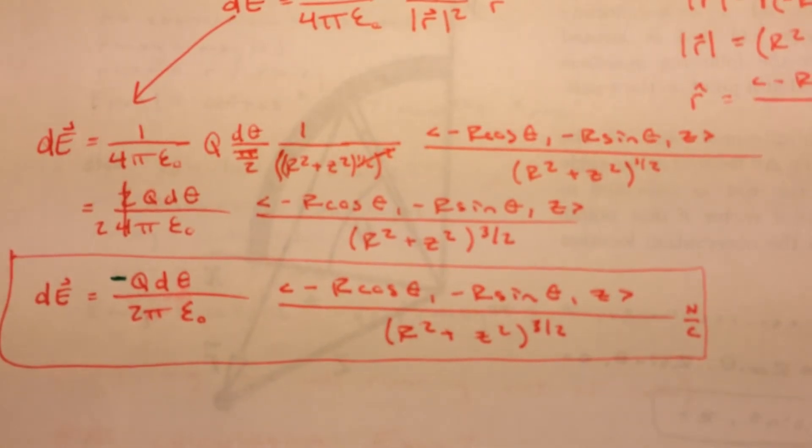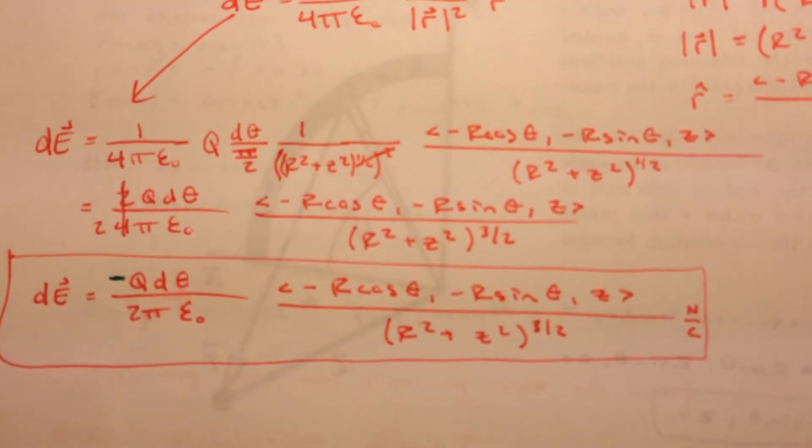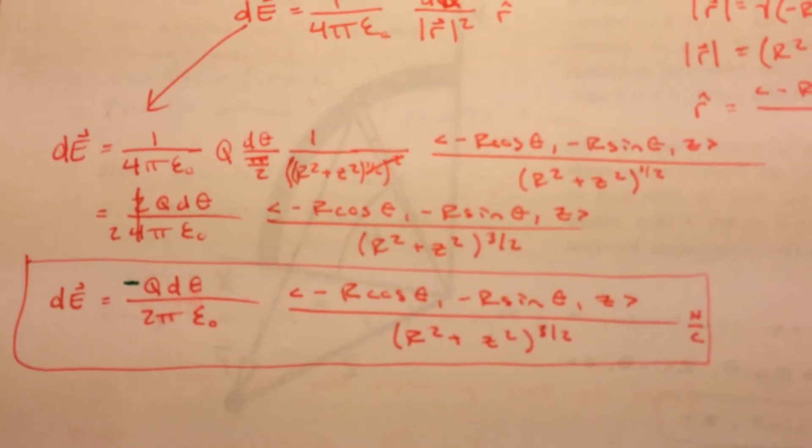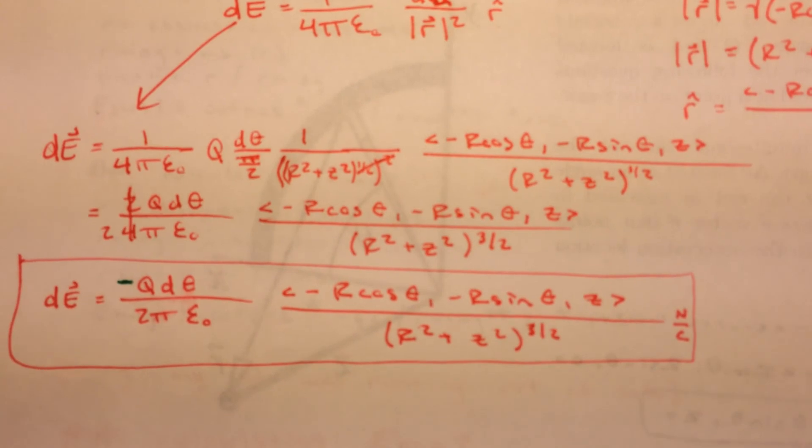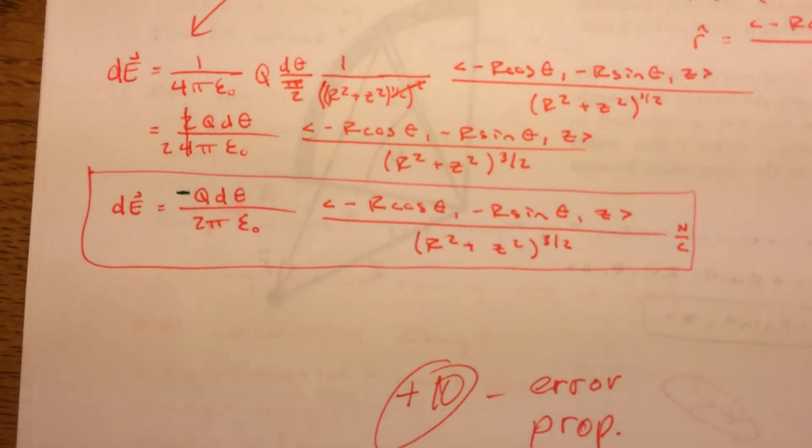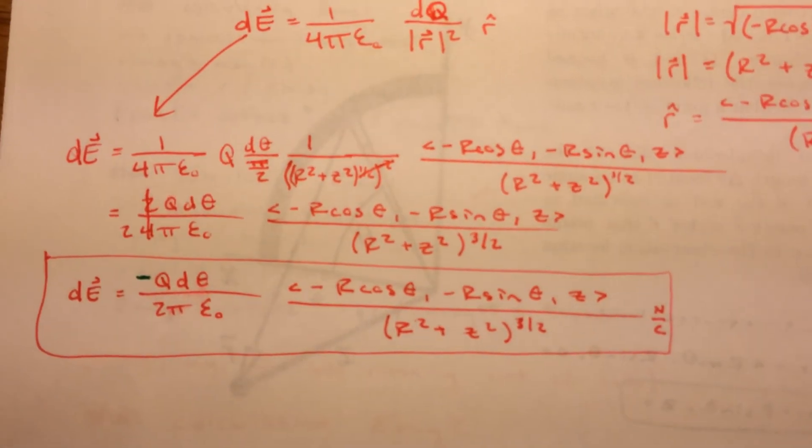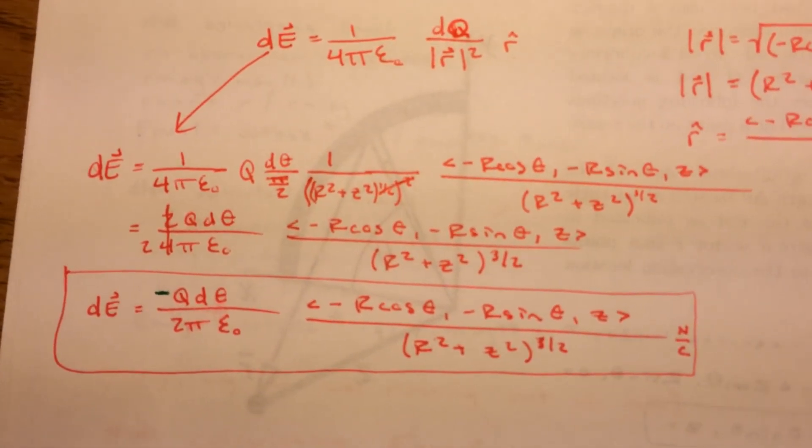And then we're going to put that r vector in there over that denominator. And that is your slice of the electric field for that infinitesimal part of the rod at the observation location of 0, 0, z.